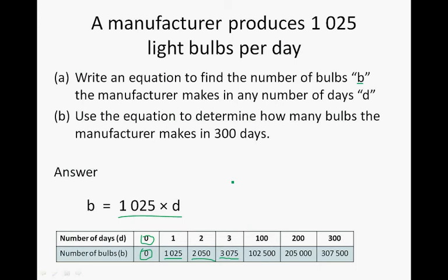And then we skip loads of numbers because we actually want to know what will happen here on day 300. So we get to 100. So 100 times 1,025 gives us 102,500. 200 times 1,025 gives us 205,000. And 300 times 1,025 gives us 307,500. So when we use the equation, we can calculate that this is the amount of light bulbs the manufacturer will make in 300 days: 307,500 light bulbs.